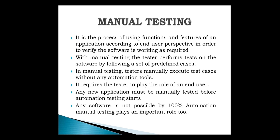Manual testing requires the tester to play the role of an end user — accessing the application from the user's perspective. Any new application must be manually tested before automation testing starts. We discover at least fifty to sixty percent of bugs from an application this way. It is not possible to perform 100% automation testing; manual testing plays an important role too.